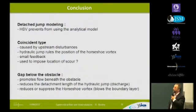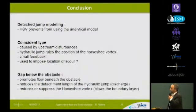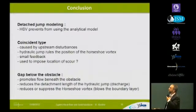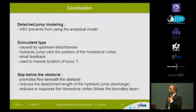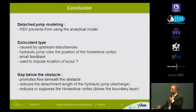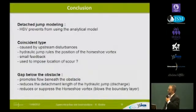As a conclusion: we studied the detached hydraulic jump in front of obstacles such as buildings in high-velocity flows, but the horseshoe vortex prevents us from using analytical modeling. We identified a new flow type — the coincident type — caused by upstream disturbances. In this case, the hydraulic jump imposes the location of the horseshoe vortex, and possibly also the initiation of scour around the obstacles.